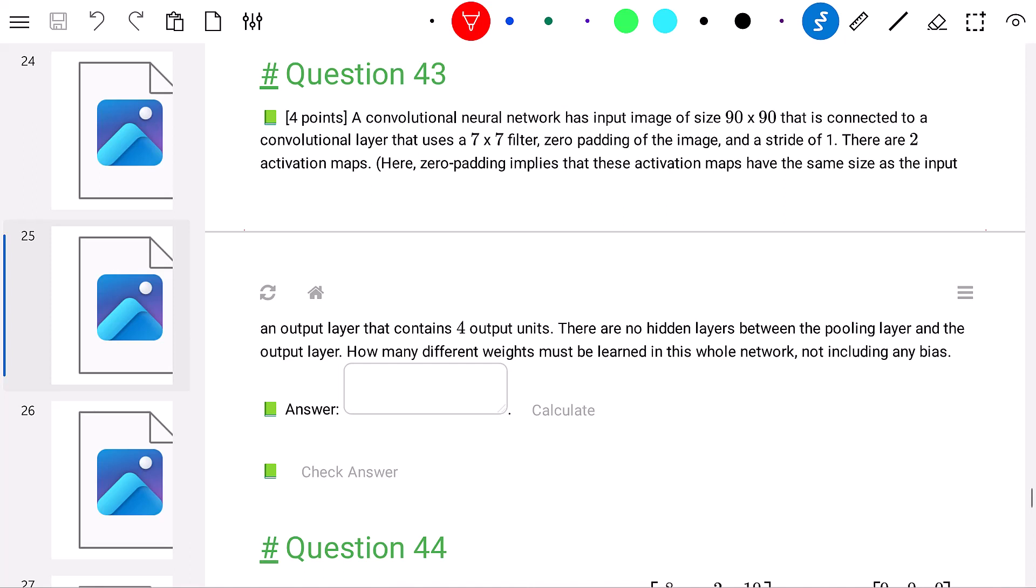This is X2, past exam number 2, question 43. It's counting the number of weights that need to be trained in a convolutional neural network. Again, it's missing one line here, and I will talk about it when we need the number.